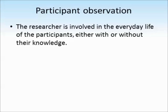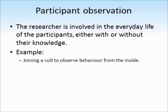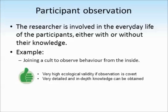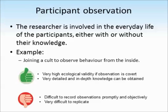The last type of observation is called participant observation. This is where the researcher becomes involved in the everyday life of the participants, either with or without their knowledge. For example, a researcher might try to join a cult to observe the behaviour of cult members from the inside — they probably wouldn't tell the rest of the cult they were researching them, but in some cases they might. These studies tend to be very high in ecological validity if the observation is covert, and they can give very detailed, in-depth knowledge about a particular group. However, it's very difficult to record observations promptly and objectively, especially if the researcher hasn't told the group they are observing them, and these studies are very difficult to replicate because you won't be able to participate in exactly the same group or activities.